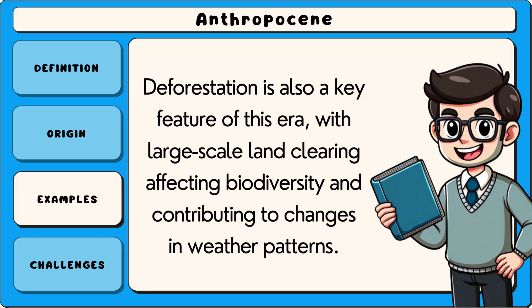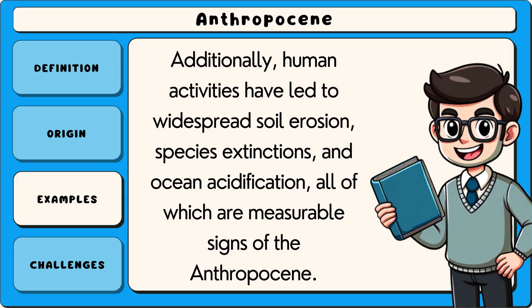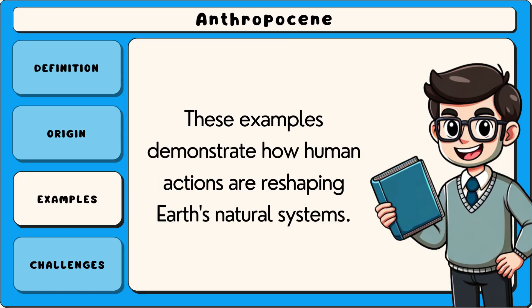Deforestation is also a key feature of this era, with large-scale land clearing affecting biodiversity and contributing to changes in weather patterns. Additionally, human activities have led to widespread soil erosion, species extinctions and ocean acidification, all of which are measurable signs of the Anthropocene. These examples demonstrate how human actions are reshaping Earth's natural systems.